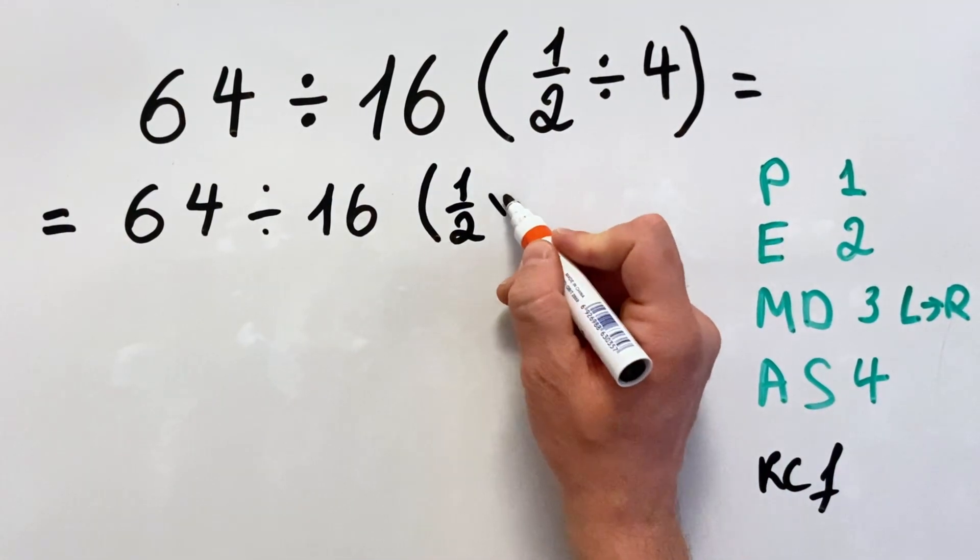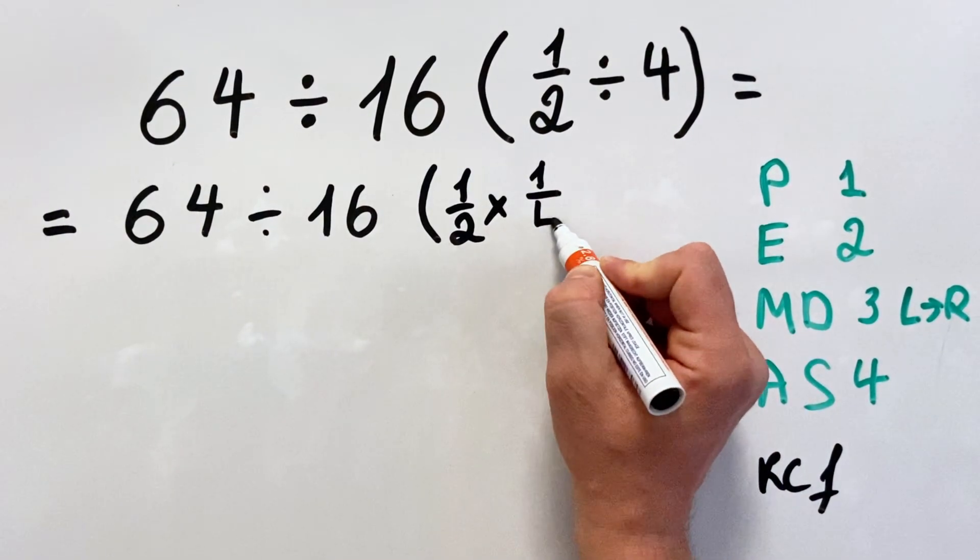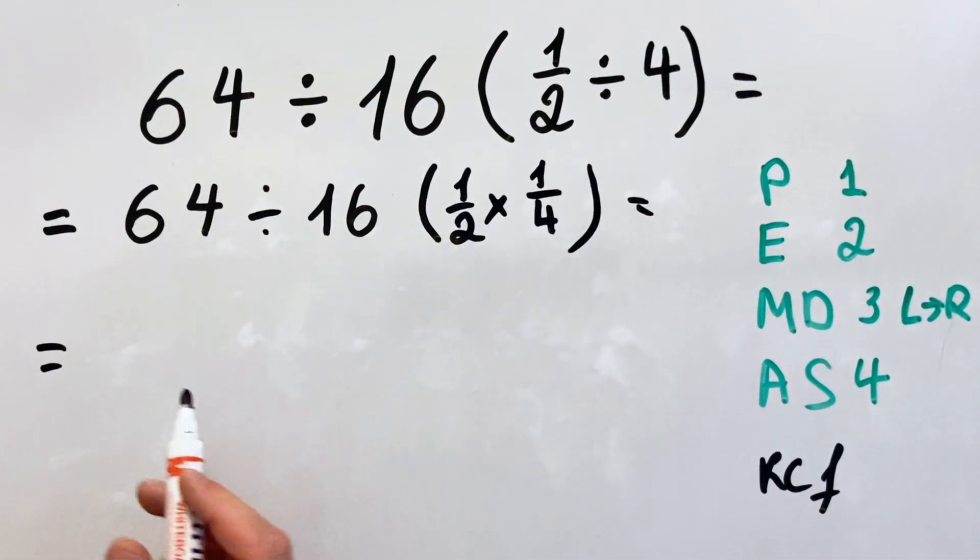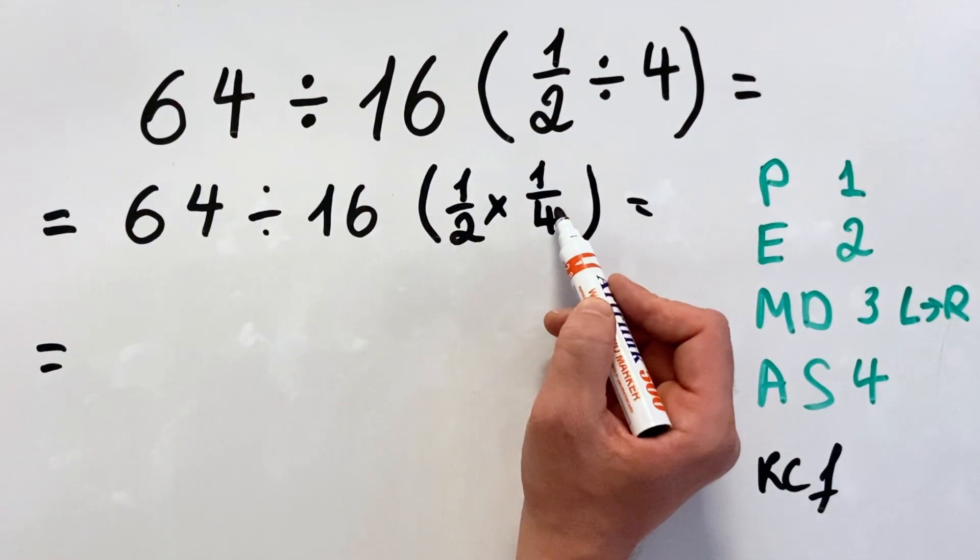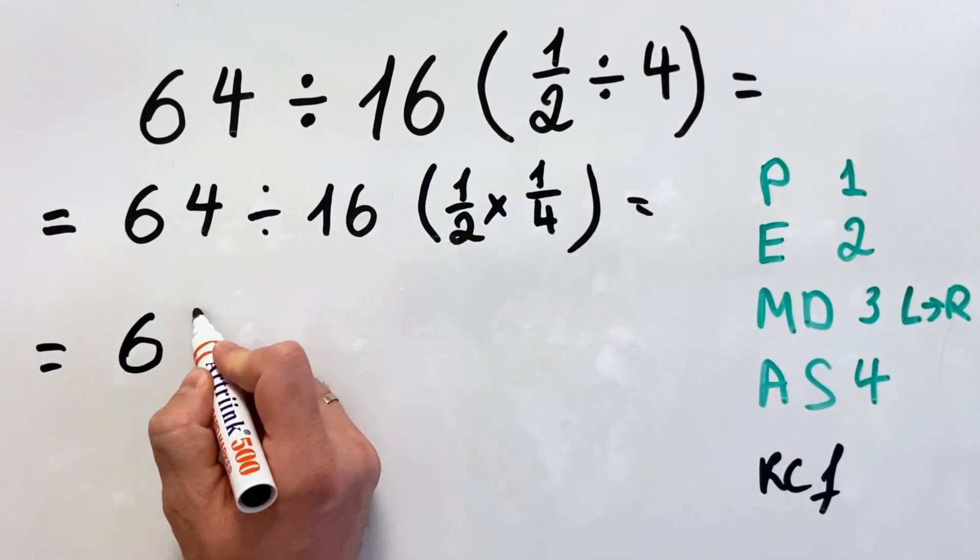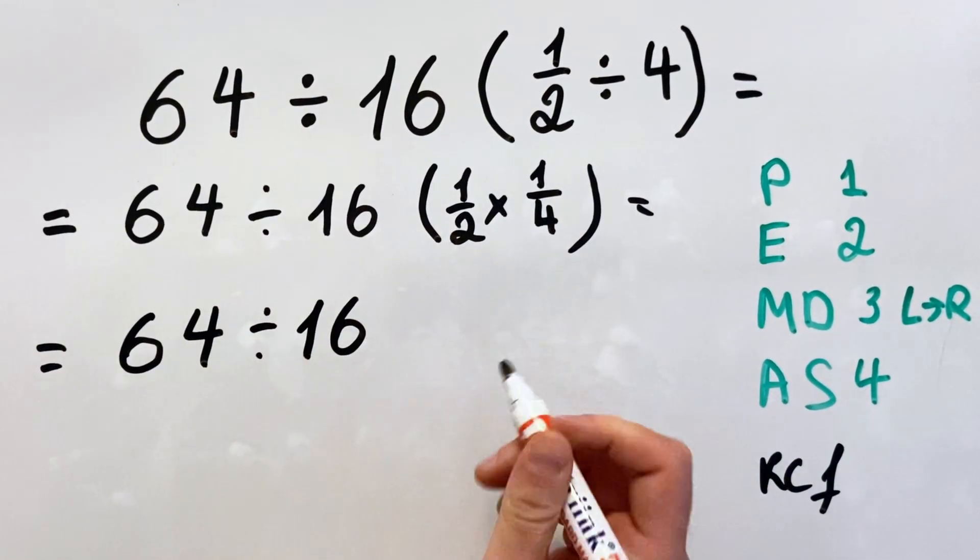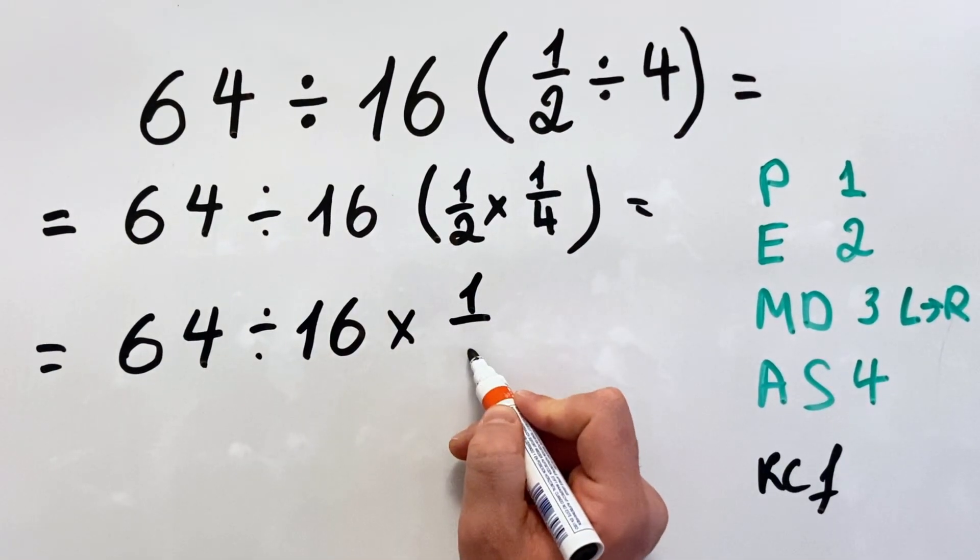So what we get is basically 1 over 2 multiplied by 1 over 4, which is 1 over 8. So what we get is 64 divided by 16 multiply by 1 over 8.